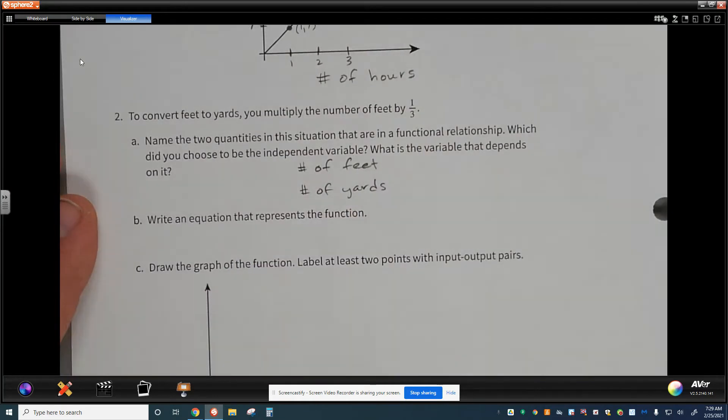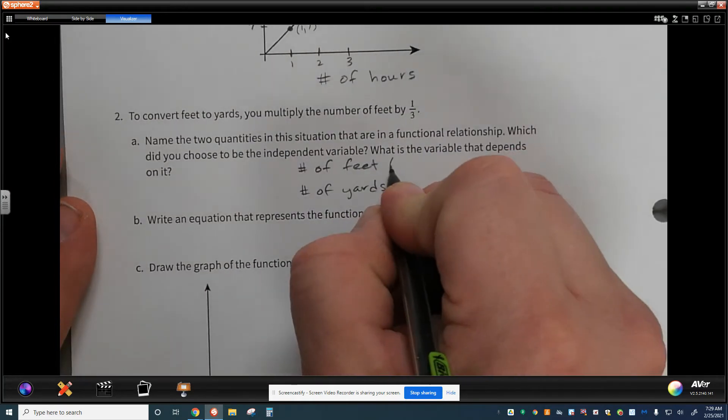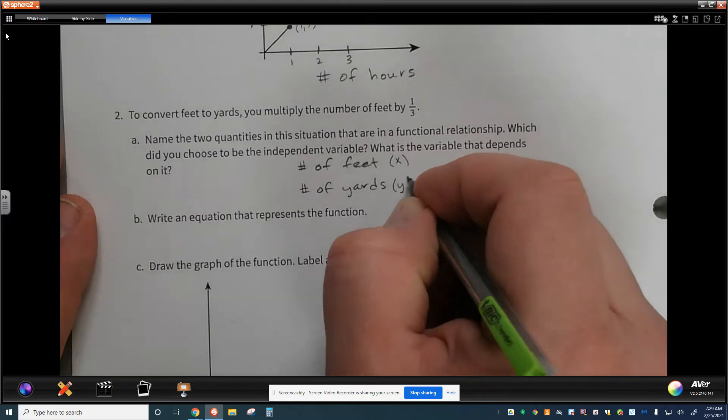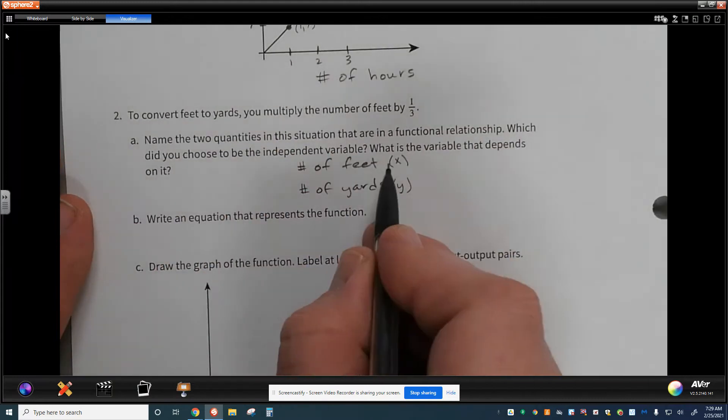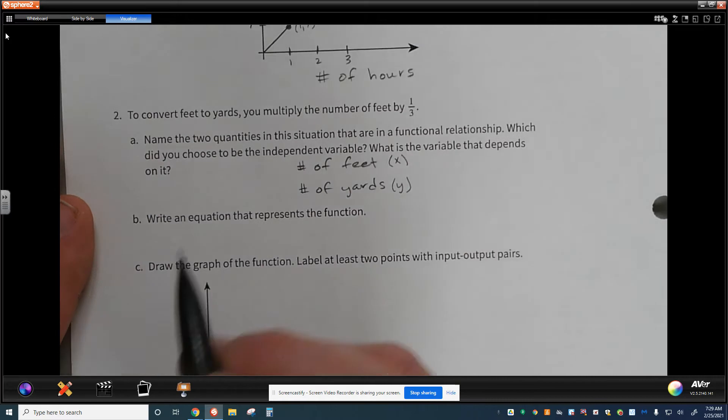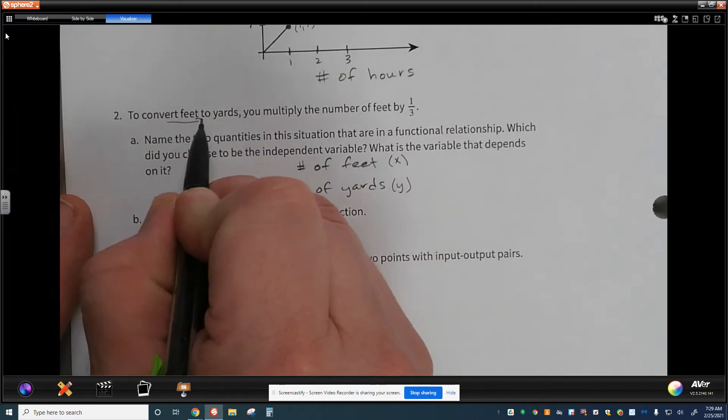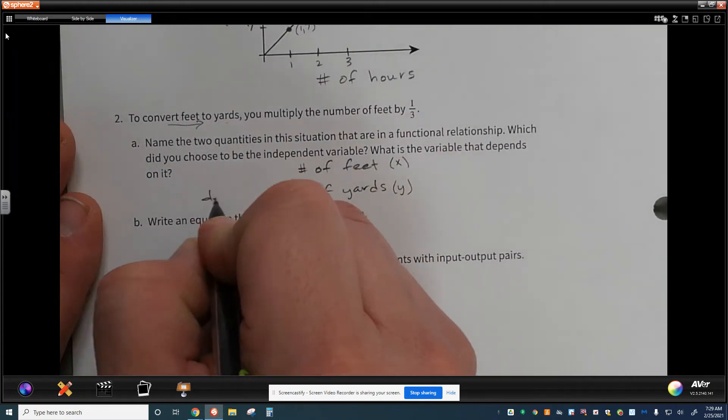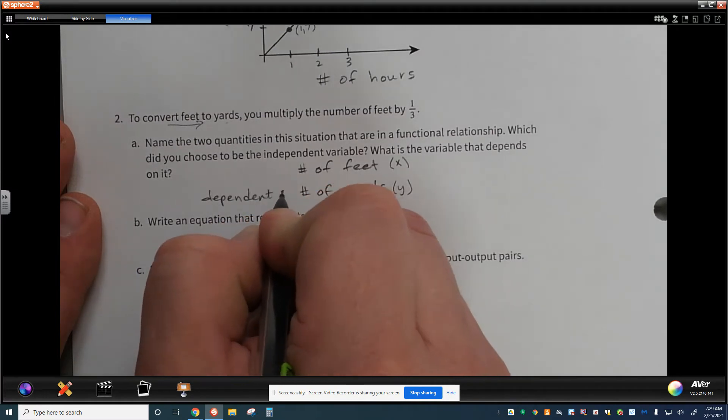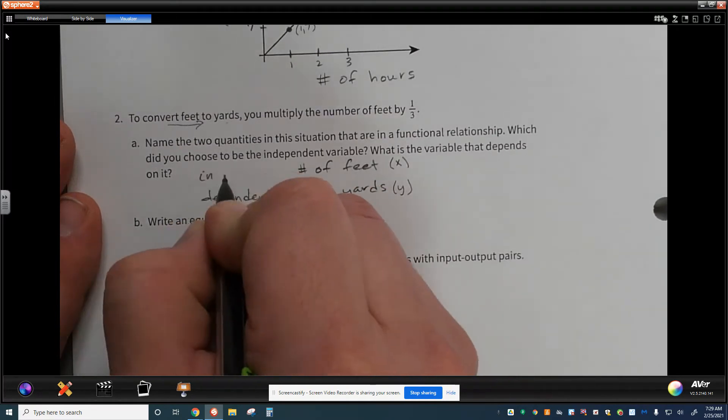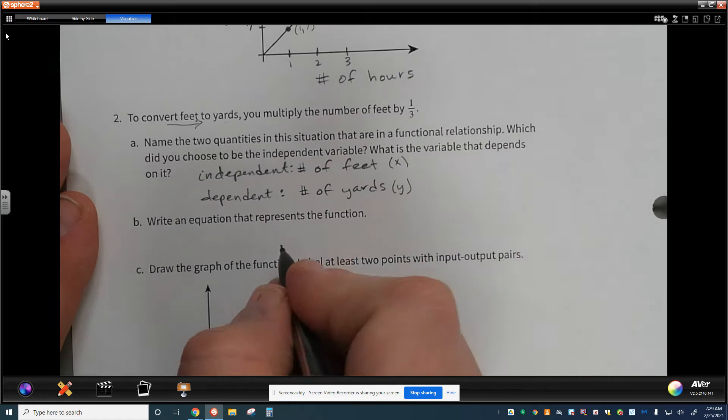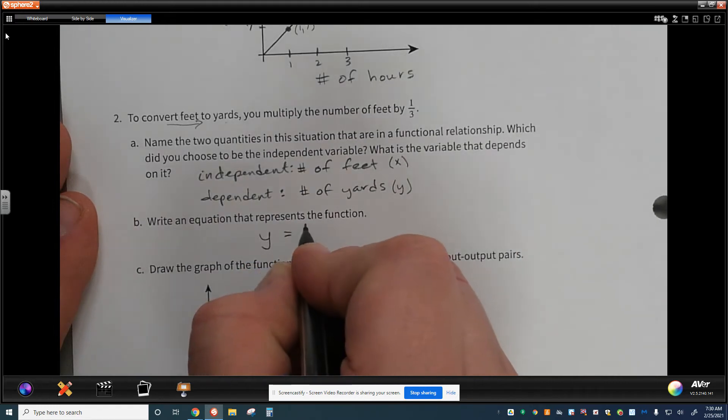So when I talk about this, I have the number of feet and I have the number of yards. When I talk about these two pieces here, I talk about feet being the input because the input is being multiplied by one-third, and then the output is the yards. The other piece of this that helps me to understand that the feet is independent and the yards are dependent is because it's saying from feet to yards. So the yards must be dependent on the number of feet, making this the dependent and then the number of feet independent.